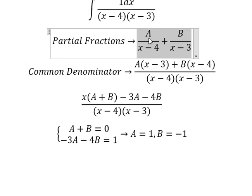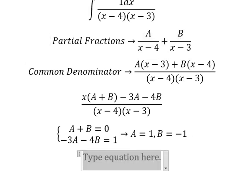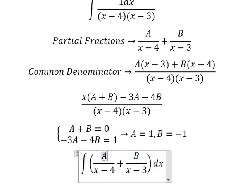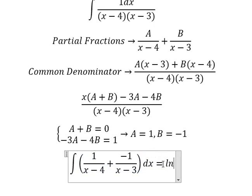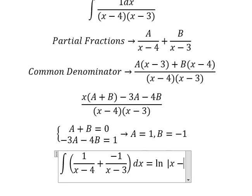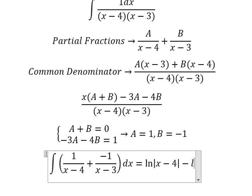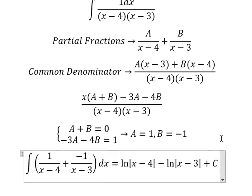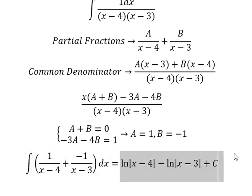So we substitute the values A=1 and B=-1. The integration becomes the integral of 1/(x-4) minus 1/(x-3) dx. This equals ln of the absolute value of (x-4) minus ln of the absolute value of (x-3) plus C. This is the final answer. Thank you for watching.